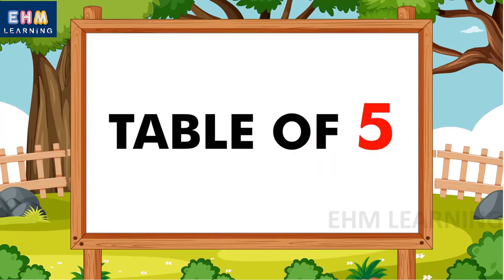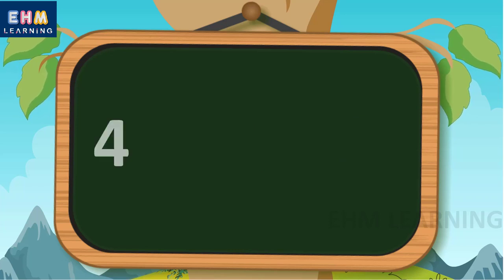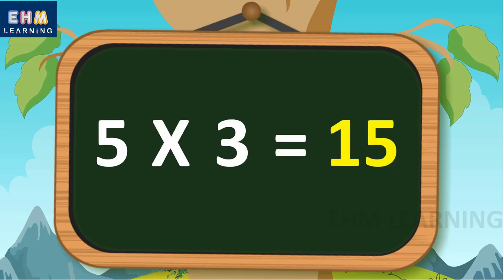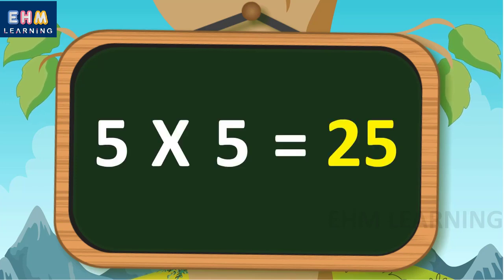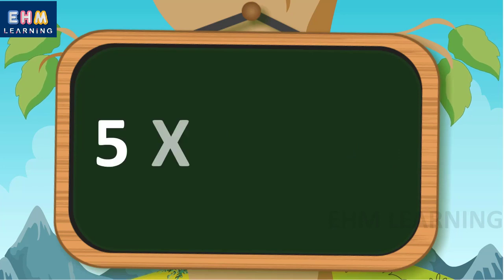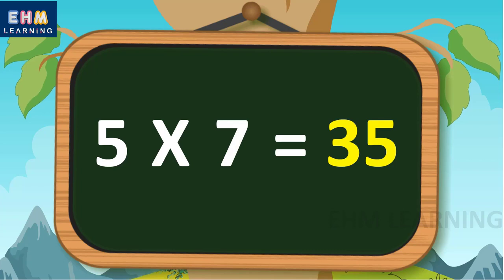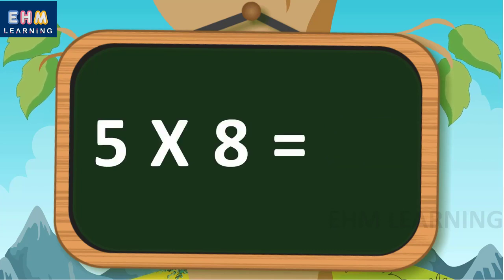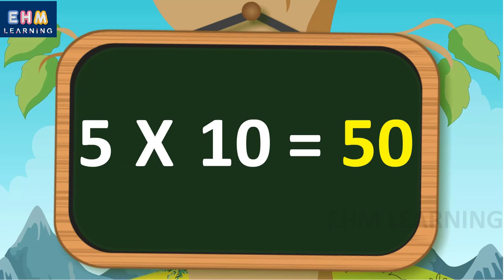Hello children, today we will learn table of five. Five ones are five, five twos are ten, five threes are fifteen, five fours are twenty, five fives are twenty-five, five sixes are thirty, five sevens are thirty-five, five eights are forty, five nines are forty-five, five tens are fifty.